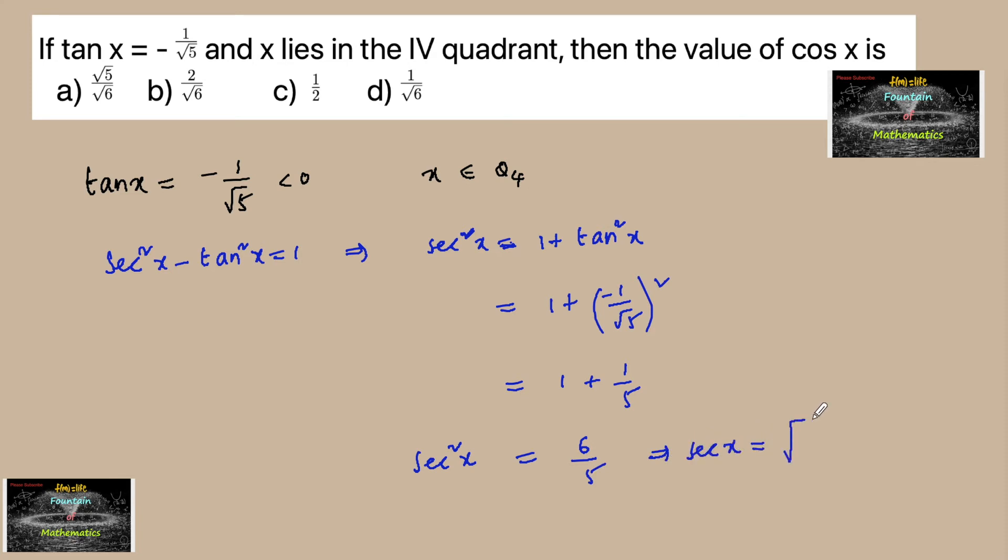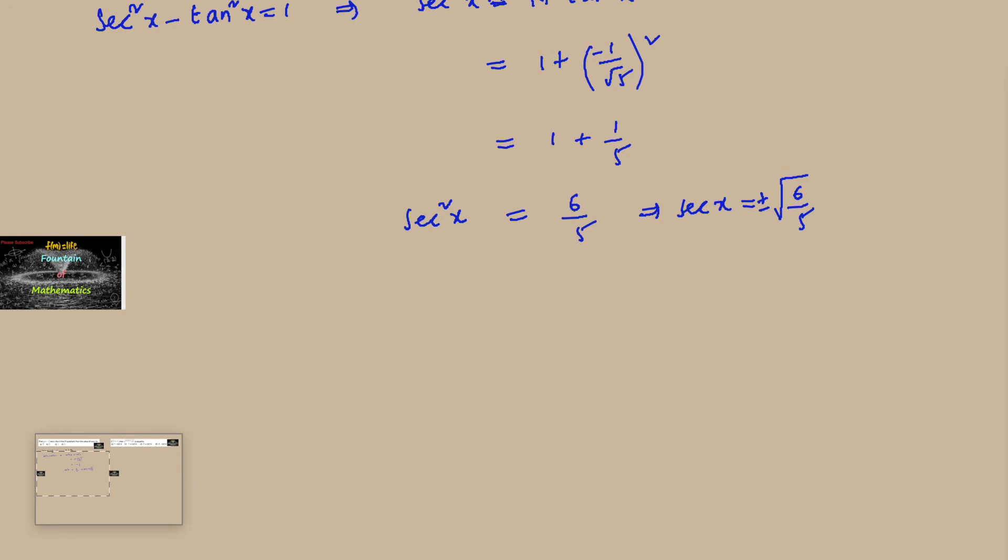root over 6 upon 5. It can be plus or minus, but since x belongs to the fourth quadrant, secant and cos both are positive, so secant x is positive.